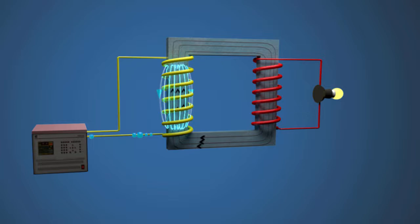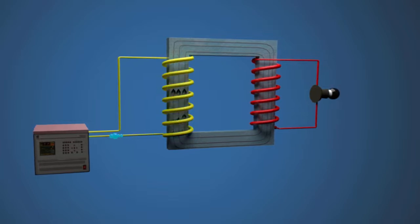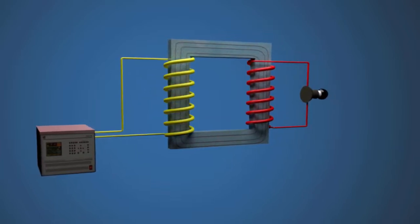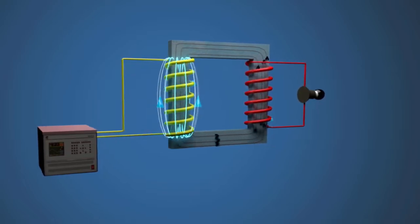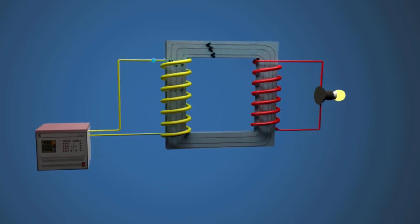Without the core, most of the magnetic flux from the primary coil wouldn't have reached the secondary coil. So the core is the vital part of a transformer and helps in efficient electrical transmission.